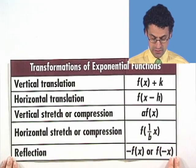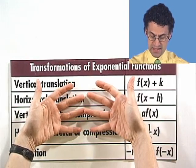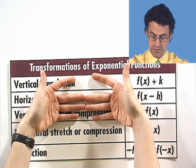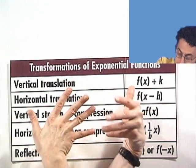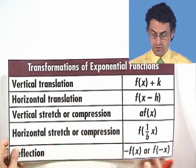And then finally, a natural thing we can do is reflect. We can take a graph and reflect it over the x-axis, or we can take a graph and reflect it over the y-axis. So there are lots of different transformations that we can perform on the exponential function, just like we can perform on any function. Let's take a look at some examples here.